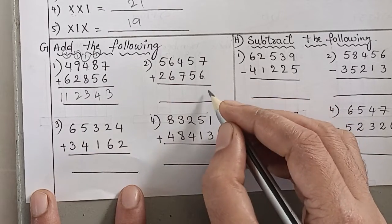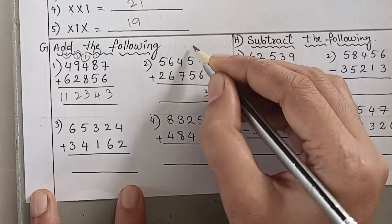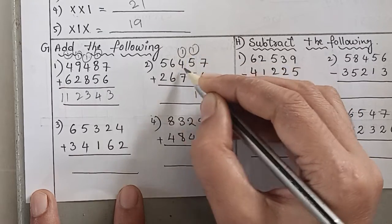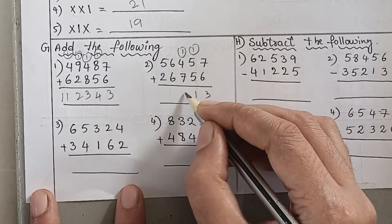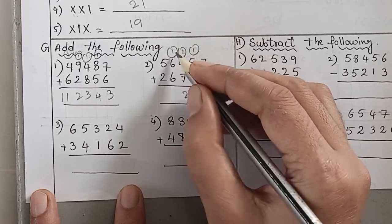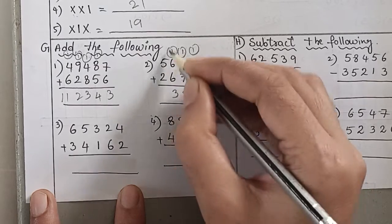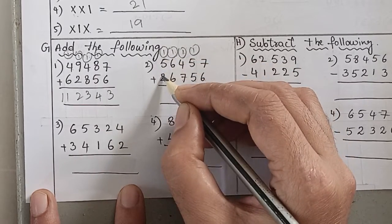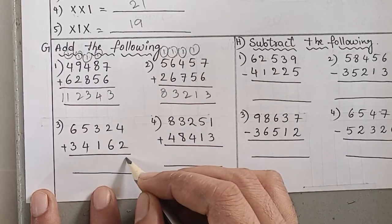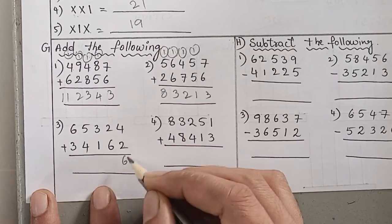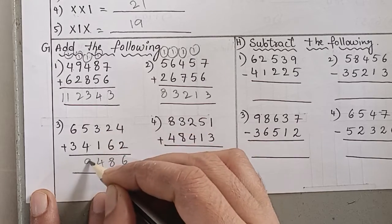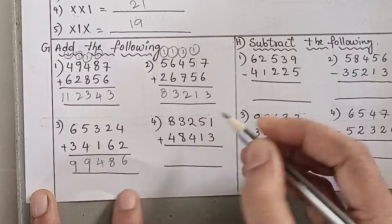Second addition: seven plus six is thirteen, write three carry one. Five plus five is ten, plus carry one is eleven, carry one. Four plus carry one is five. Five plus seven is twelve, write two carry one. Six plus six is twelve, carry one — thirteen, carry one. Five plus two is seven, seven plus carry one is eight. Four plus two is six. Two plus six is eight. Three plus one is four. Five plus four is nine. Six plus three is nine.